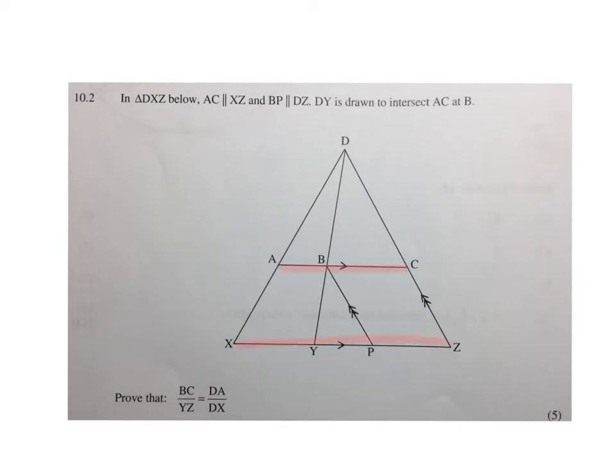So those two red lines are parallel, and they said BP is parallel to DZ, the two blue lines. They said DY is drawn to intersect AC at B. Then they asked, prove that BC over YZ is equal to DA over DX. So we must prove that the ratio of the blue line on top of this blue line is equal to that red line on top of that red line.